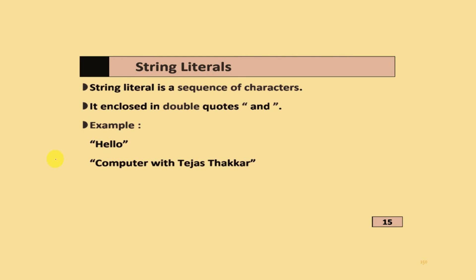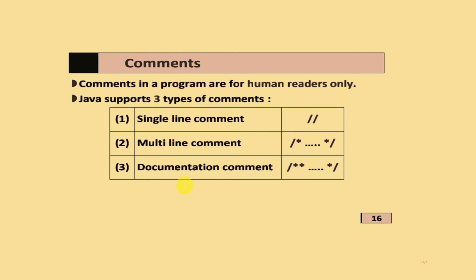String literals are a sequence of characters enclosed in double quotation marks. An example is "Hello" or "Computer with Kidar Sir". Comments in a program are for human readers only. Java supports three types of comments: single-line comments using double forward slash (//), multi-line comments using /* write your comments */, and documentation comments using /** write your comments */.